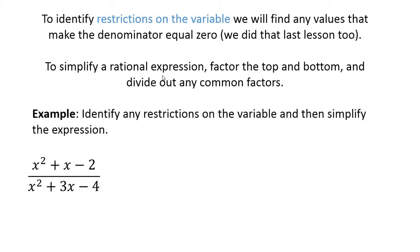All right, so kind of recap of today's lesson. To identify restrictions on the variable, really we did that last lesson. It's just any values that make the denominator equal zero. So it's just a different way of stating what we've already done. Those discontinuities, basically those things that create vertical asymptotes, those are going to restrict the variable.